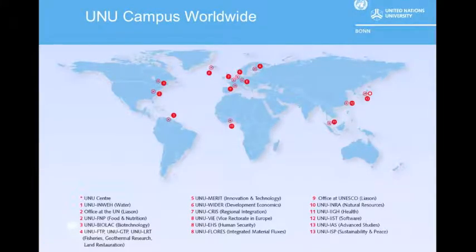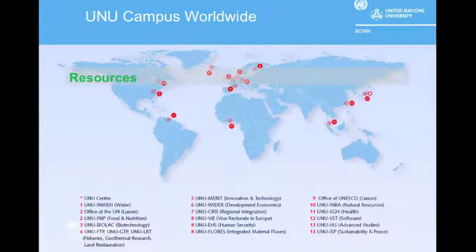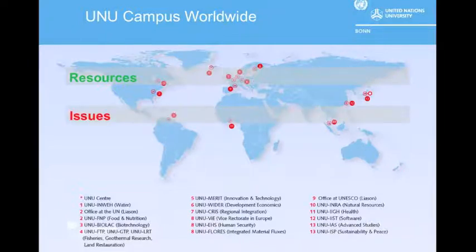The map represents the global distribution of UNU institutes, programs, and administrative units. As you can see, the majority of UNU facilities are located primarily in developed countries, which have the resources, while the regions where much of the development work is taking place do not have established UNU facilities.